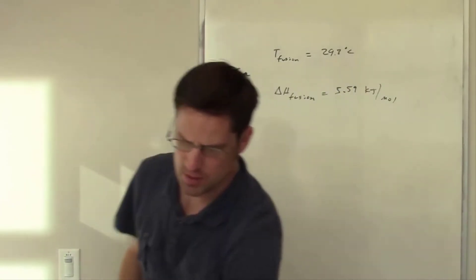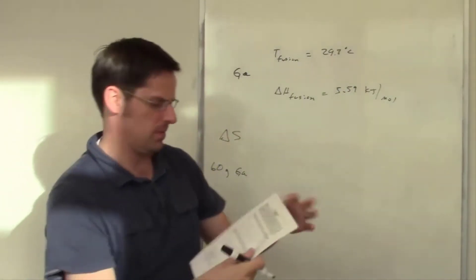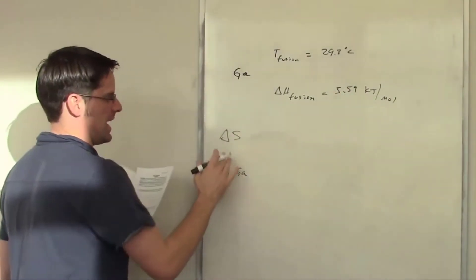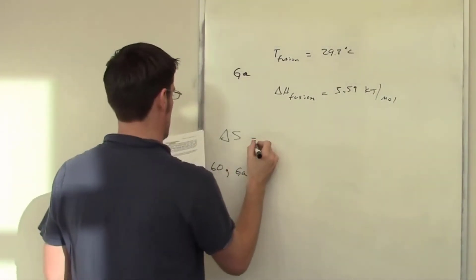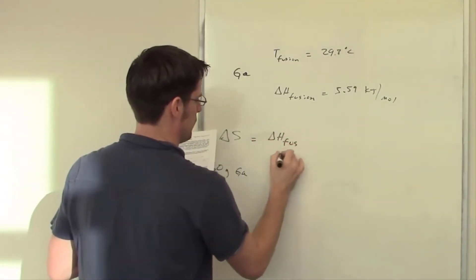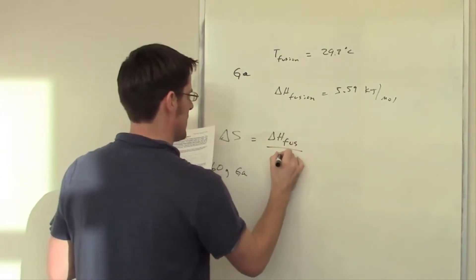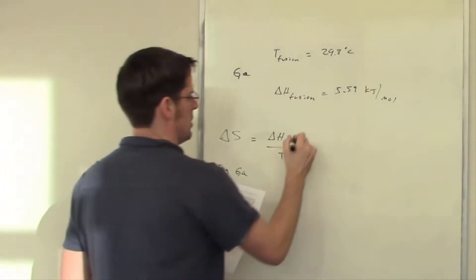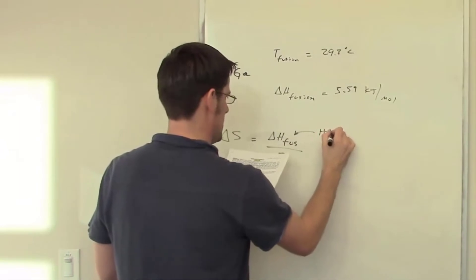Now this hails back to an equation that I showed you in a separate video that says that delta S, or change in entropy for any physical process, is going to be equal to delta H, or change in enthalpy of fusion, divided by T.